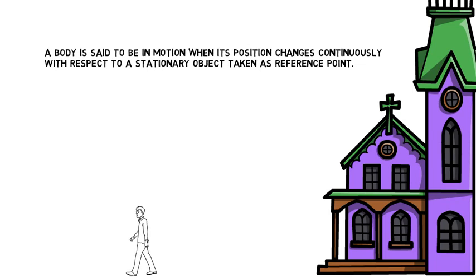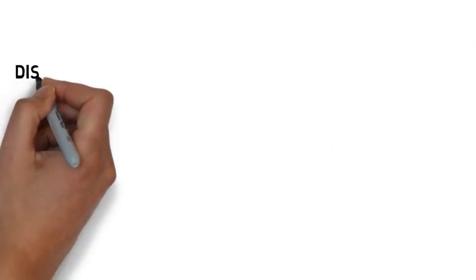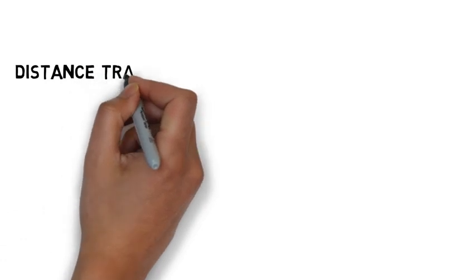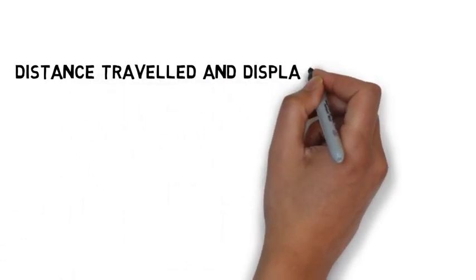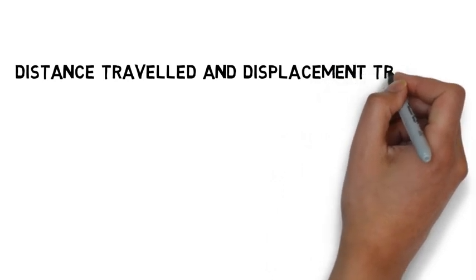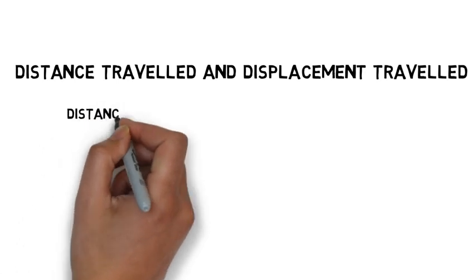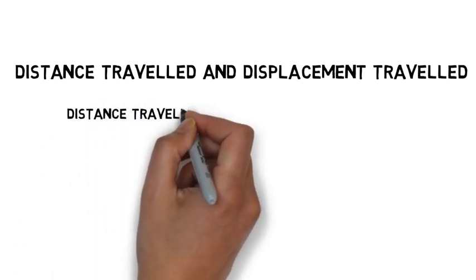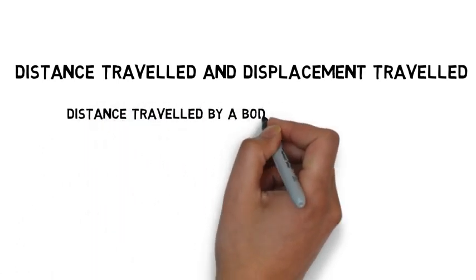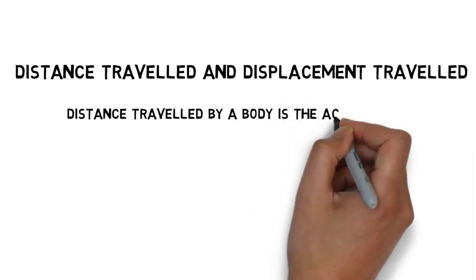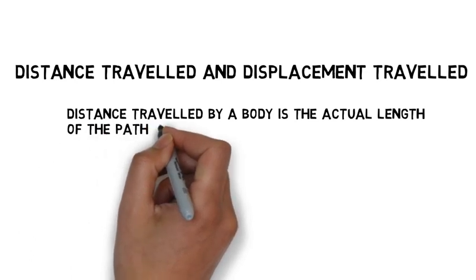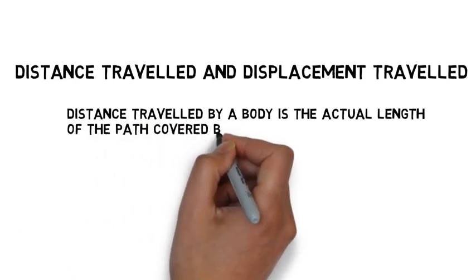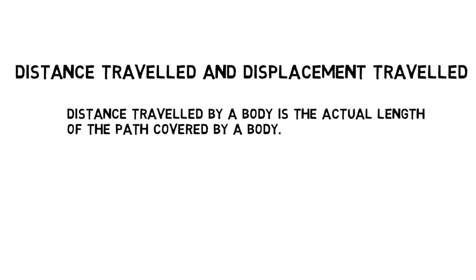Distance traveled and displacement — these are two important words to study in this chapter. What is the difference between them? Distance traveled by a body is the actual length of the path covered by the body.